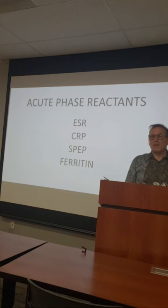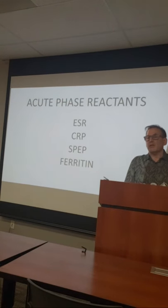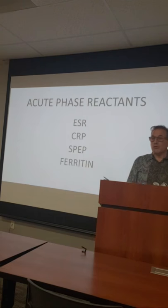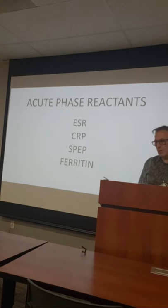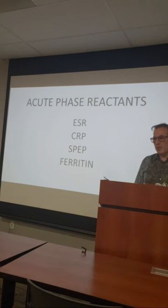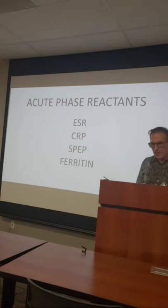Acute phase reactants — why do I order them, when do I order them, what do they mean? There are hundreds, but the four that are orderable and come up for different reasons are the ESR, the CRP, the ferritin, and the serum protein electrophoresis.